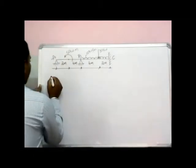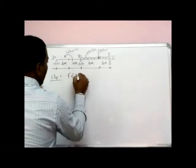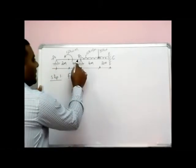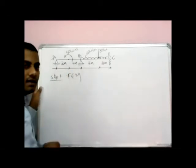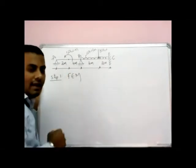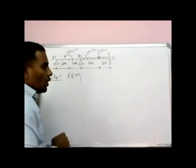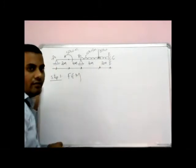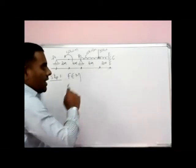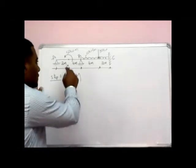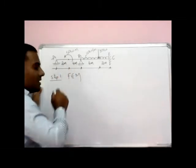Step one: to find fixed end moments. There are two spans A-B and B-C. On the A-B span there is an external moment acting anticlockwise at a distance of 2 meters from A and 4 meters from B. On the B-C span there are two types of loading: UDL and a concentrated load of 30 kN at a distance of 4 meters and 2 meters. The formula to calculate the fixed end moment for a moment acting at distance A and B is used.